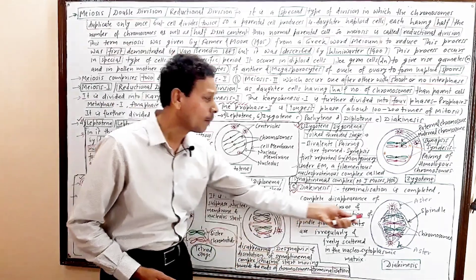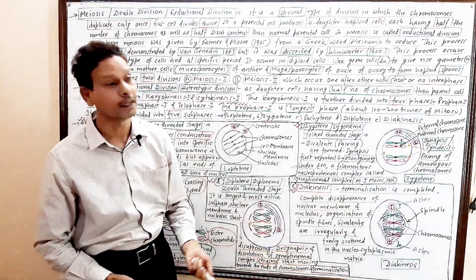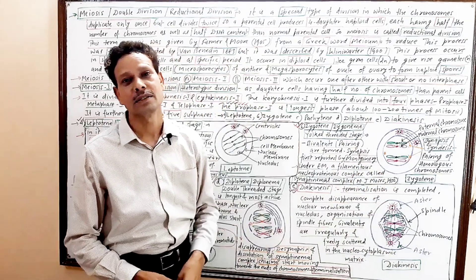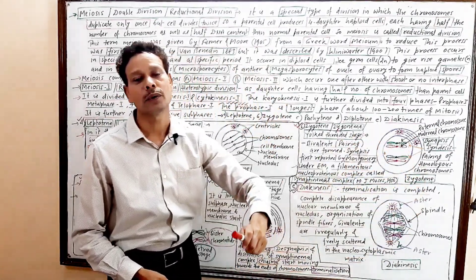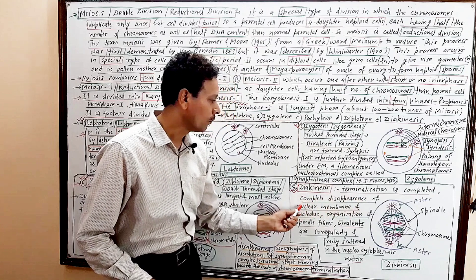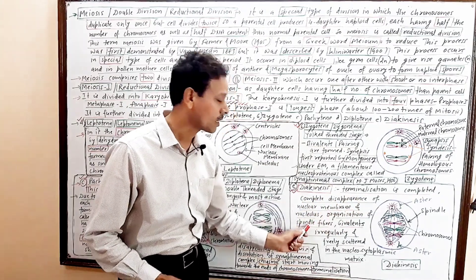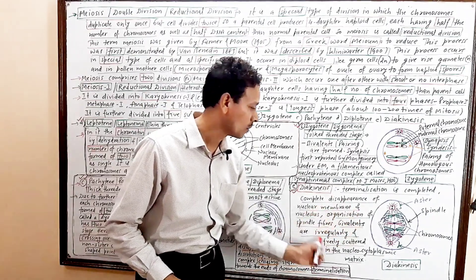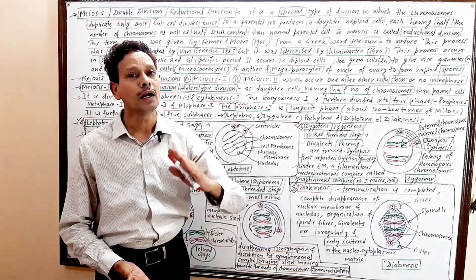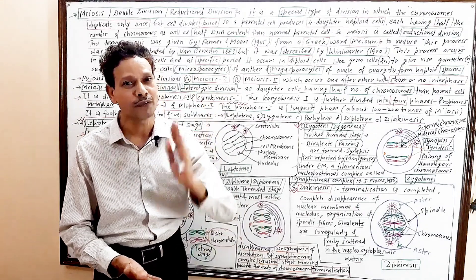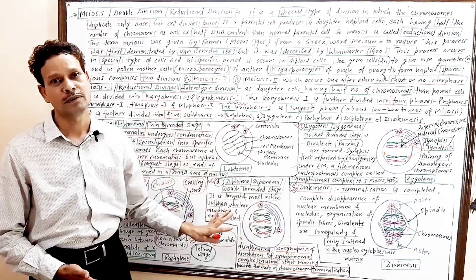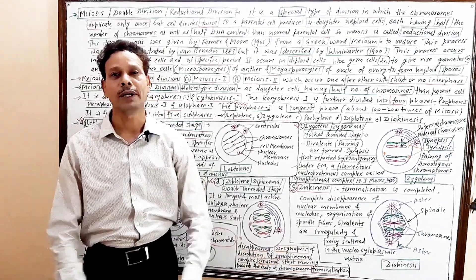The last sub-stage of prophase one is diakinesis, which involves the complete disappearance of the nucleolus and nuclear membrane. Both pole asters are well developed, and between these two poles the spindle fibers are organized. On these spindle fibers, chromosomes get arranged. This completes our discussion of prophase one of meiosis first. Thank you.